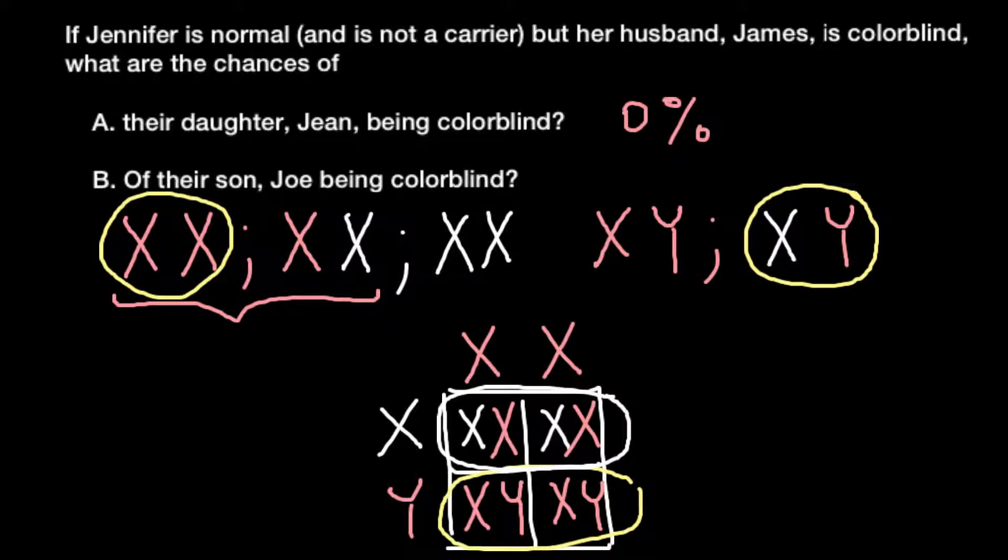As you see, according to the Punnett square, 100% of the male progeny in this family would be phenotypically and genotypically normal. So chances for the males in this family to be colorblind also would be 0%.